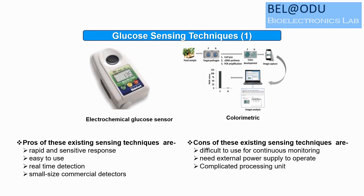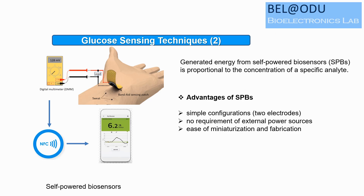Conventional glucose sensing techniques include electrochemical and colorimetric sensing. The advantages of these existing techniques are rapid and selective response due to relative detection using small commercial detectors. The disadvantages are difficulty for continuous monitoring, need for an external power source, and complicated processes.